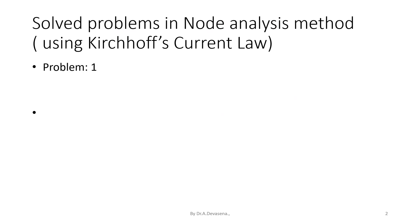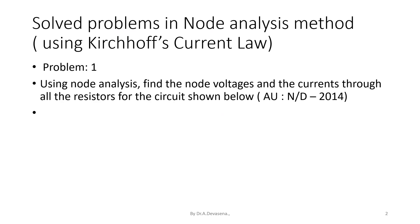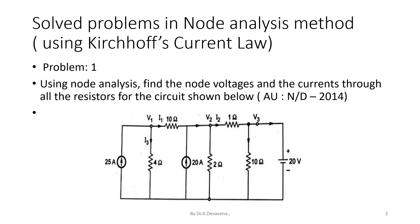Problem 1. Using node analysis, find the node voltages and the currents through all the resistors for the circuit shown below. This question is asked in a university, November-December 2014. In this diagram, we have two current sources. One is 25 amps and the other is 20 amps. And we have a voltage source with value 20 volts.